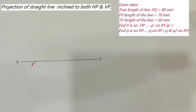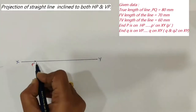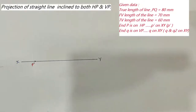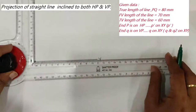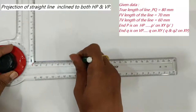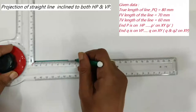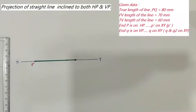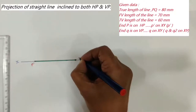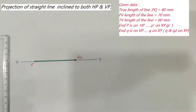After that, the problem states that the front view length is 70mm and the top view length is 60mm. Draw the front view length parallel to the XY line starting at P'. Since P' is on the XY line, the front view length also falls on the XY line. With the given front view length of 70mm, draw the front view on the XY line and name this point Q2'.